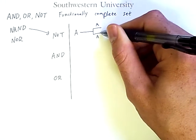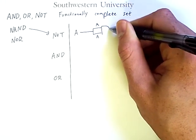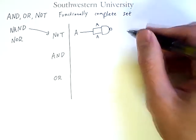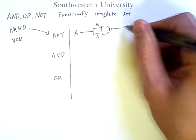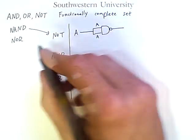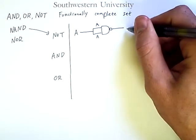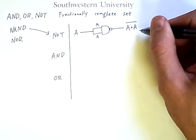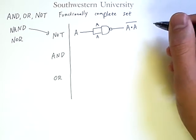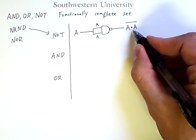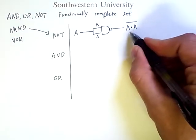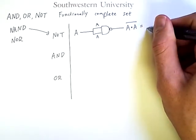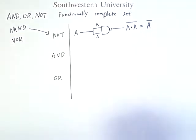I then put that result into a NAND gate. And the result that comes out, according to how NAND is defined, will be the negation of A AND A. But because anything ANDed with itself is that original input, this is equivalent to simply NOT A.